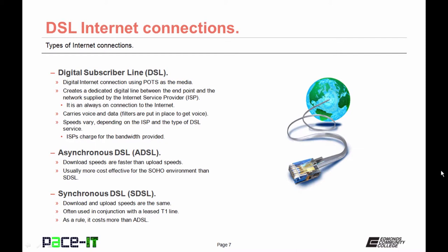There are two main flavors of DSL. First is ADSL, asynchronous DSL, where download speeds are faster than upload speeds. It's usually more cost effective for the small office home office environment than SDSL. SDSL stands for synchronous DSL, where download and upload speeds are the same. Often when SDSL is deployed it's used in conjunction with a leased T1 line. As a rule, SDSL costs more than ADSL, and in most SOHO cases ADSL works just fine.